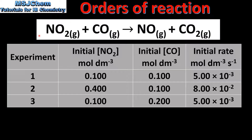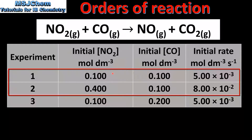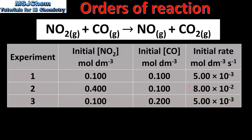In our final example we will determine the orders of reaction with respect to nitrogen dioxide and carbon monoxide in this reaction. Starting with the nitrogen dioxide, if we compare experiments 1 and 2 we can see that the concentration has been increased by a factor of 4, while the concentration of carbon monoxide has remained constant. If we compare the initial rate of reaction we can see that it has increased by a factor of 16. So when the concentration of nitrogen dioxide increases by a factor of 4 the rate increases by a factor of 16 — therefore the reaction is second order with respect to nitrogen dioxide.